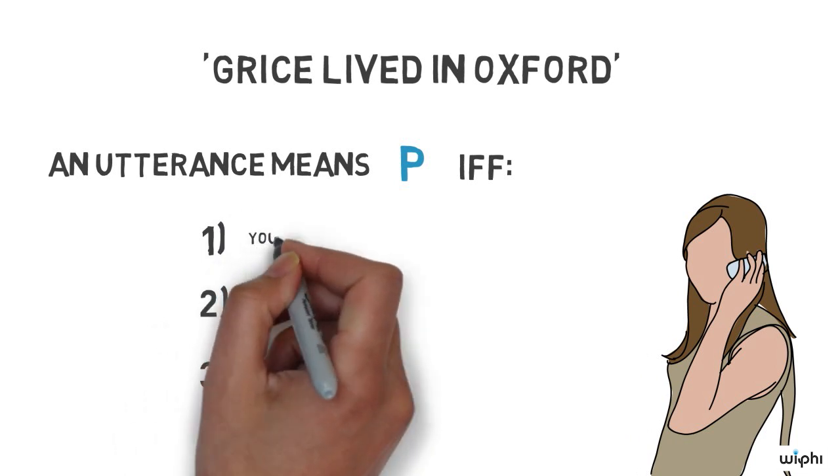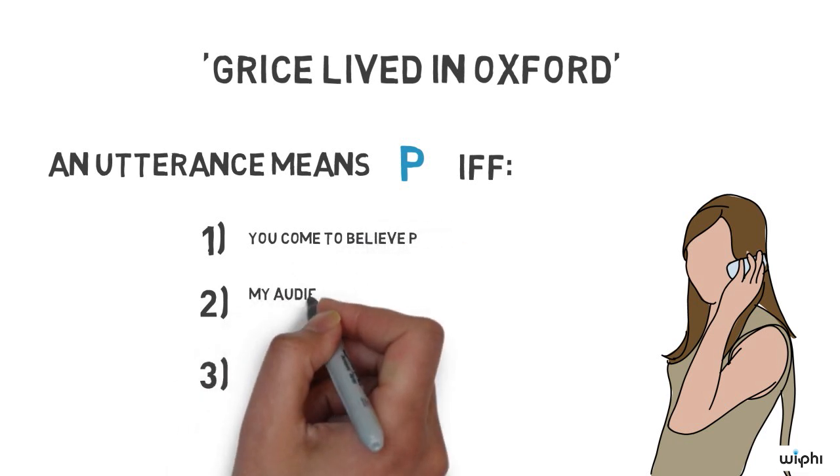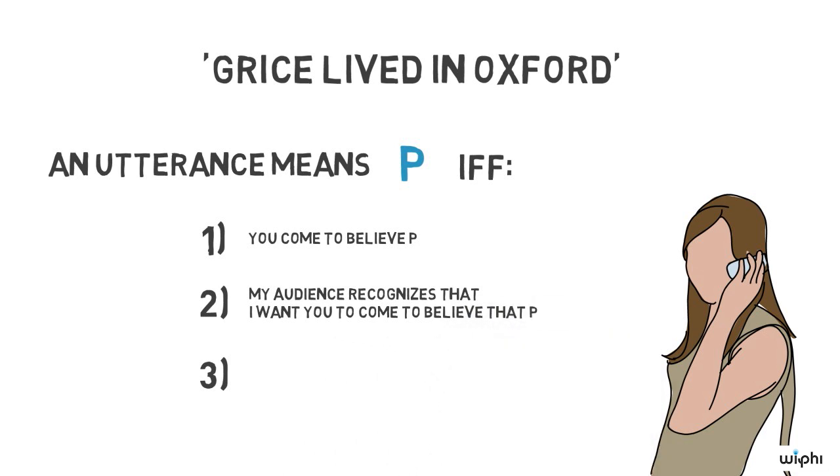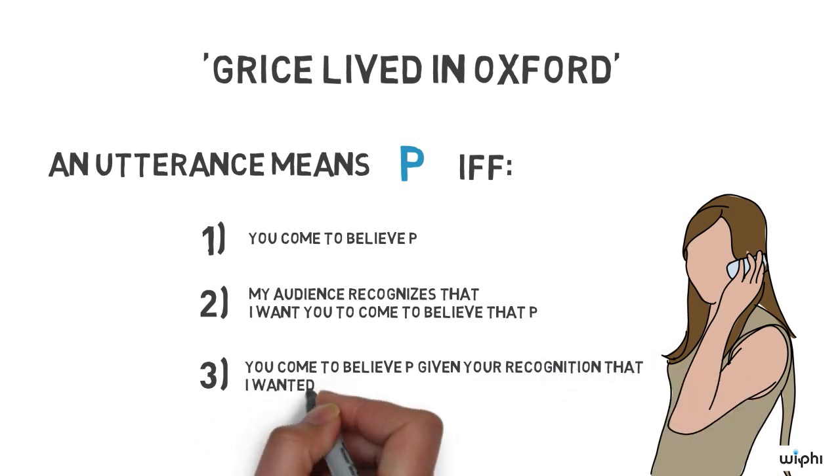First, that my audience, that's you, come to believe P. Second, that my audience recognizes that I want you to come to believe that P, that I had that intention. And third, that you come to believe P, given your recognition that I wanted you to come to believe P.